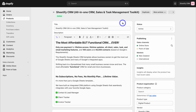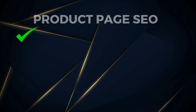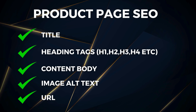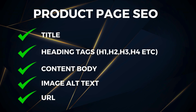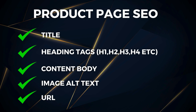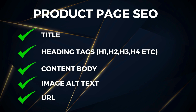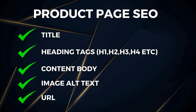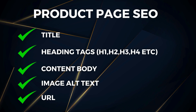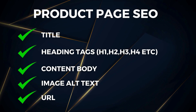When it comes to your product pages, there are five placements where we want to add our keywords to optimize them. The first placement is the title. Then we also want to add keywords into the heading tags as well as the content body. We want to add keywords to the alt text in our images, and finally to the URL, where we add our secondary keywords.